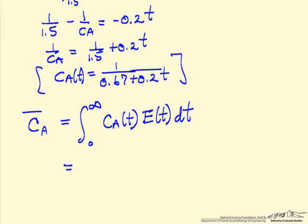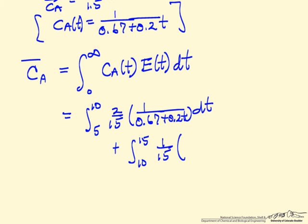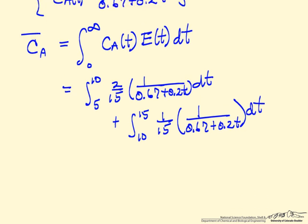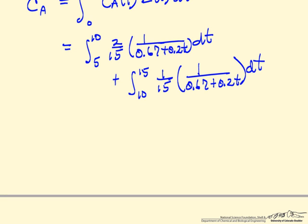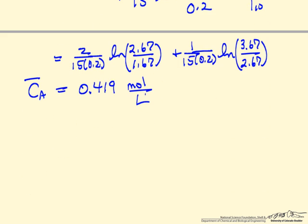We integrate over those two ranges — from 5 to 10 minutes where the value is 2/15, and from 10 to 15 minutes where it is 1/15 — along with the concentration as a function of time. Performing the integration gives the logarithmic expression. Substituting in the numbers and applying the limits gives the average concentration leaving this reactor assuming segregated flow.